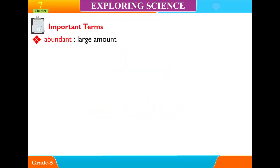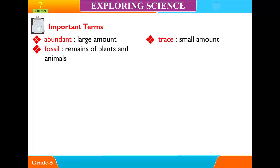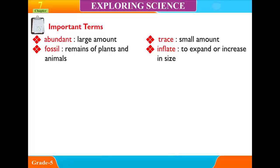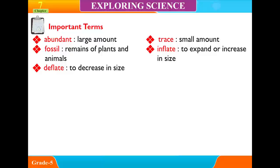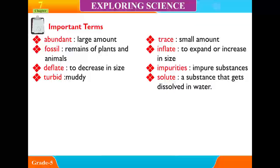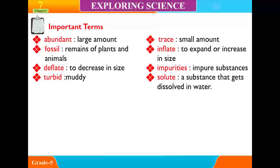Important Terms: Abundant means large amount. Trace means small amount. Fossil refers to the remains of plants and animals. Inflate means to expand or increase in size. Deflate means to decrease in size. Impurities are impaired substances. Turbid means muddy. Solute is a substance that gets dissolved in water.